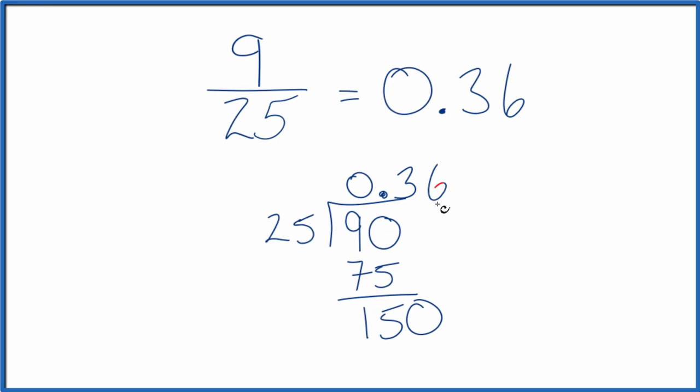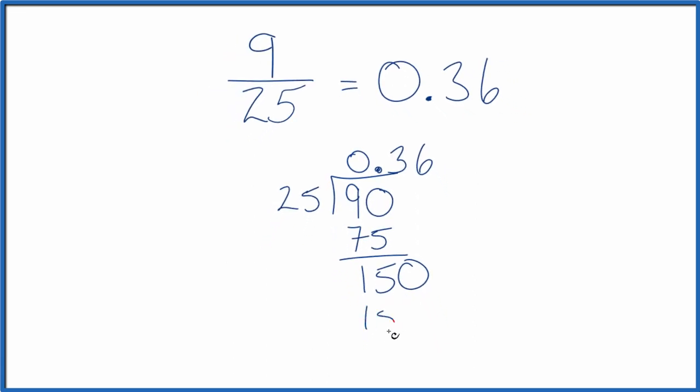And 6. 6 times 25, that's 150. We subtract and we get a remainder of zero. So 9 divided by 25 is 0.36.